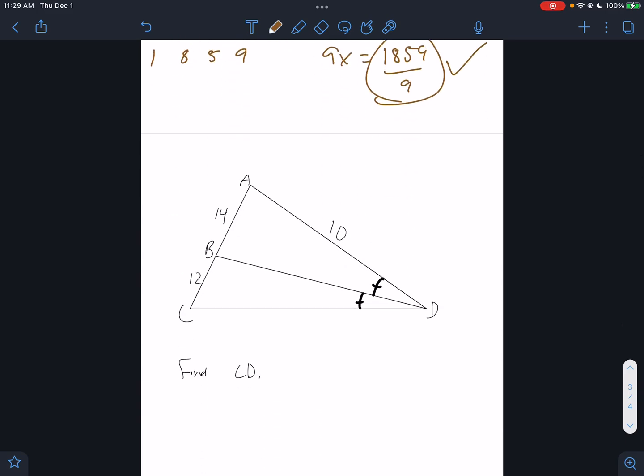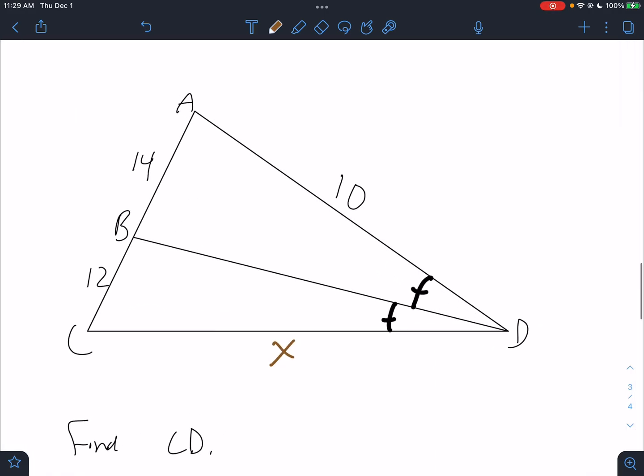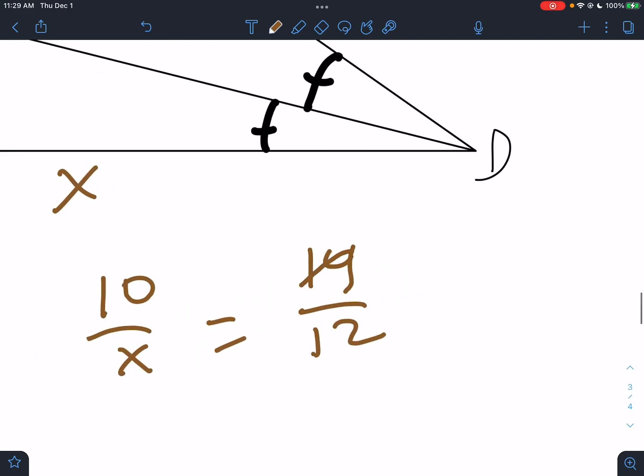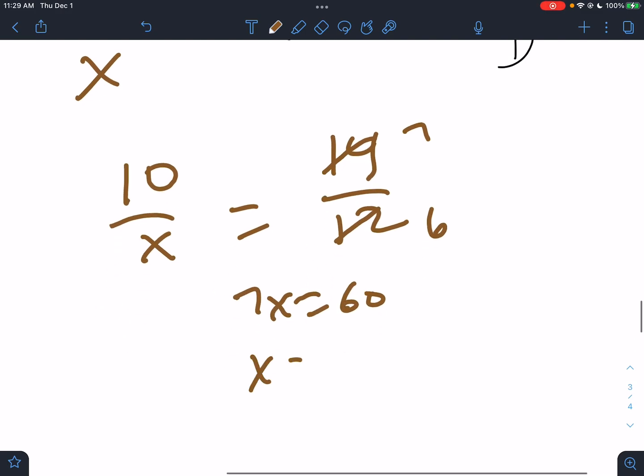Angle bisector situation. Find CD. So I'm going to put X on CD. Angle bisector rule is side over side equals part over part. So that's the setup. Reduce. This would be 7 over 6. So 7X equals 60. So X equals 60 over 7.